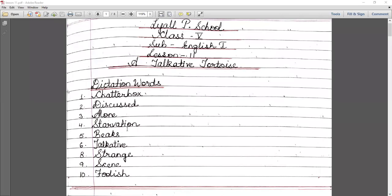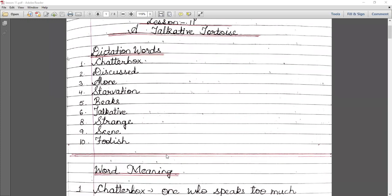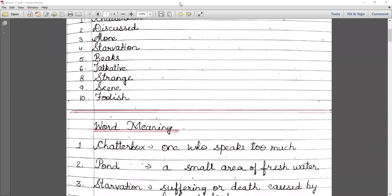S-T-A-R-V-A-T-I-O-N, starvation. Number fifth, beaks: B-E-A-K-S. Number six, talkative: T-A-L-K-A-T-I-V-E. Number seven, strange: S-T-R-A-N-G-E. Number eight, scene: S-C-E-N-E. And number nine, foolish: F-O-O-L-I-S-H. Now let's start the word meaning of this chapter.